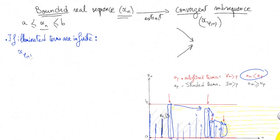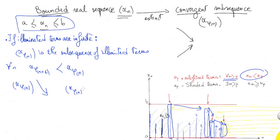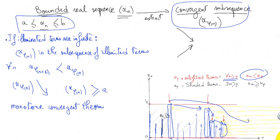If x phi n is simply the subsequence of illuminated terms, for every n, x phi of n plus 1 is by definition lower than x phi of n. x phi of n is then decreasing and bounded. The monotone convergence theorem tells us that every bounded monotone sequence is convergent. We then have our convergent subsequence, which will be constructed simply by following the illuminated terms.